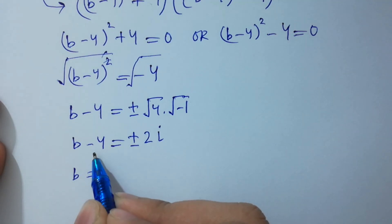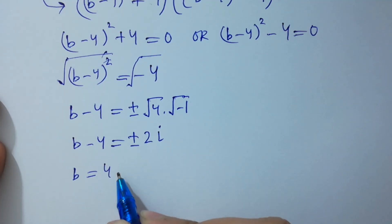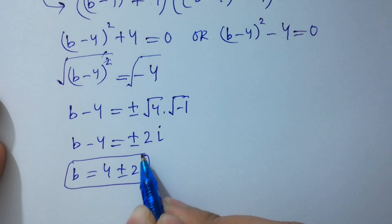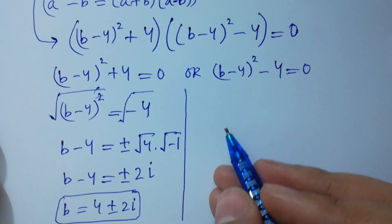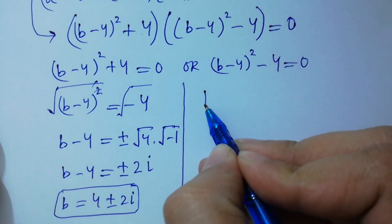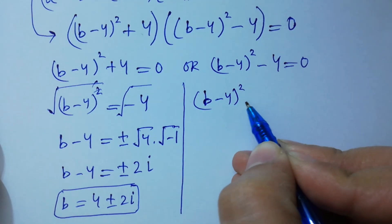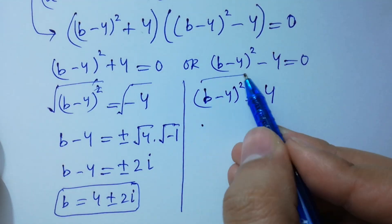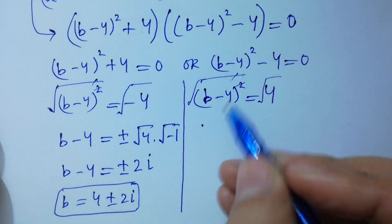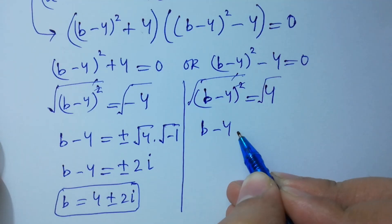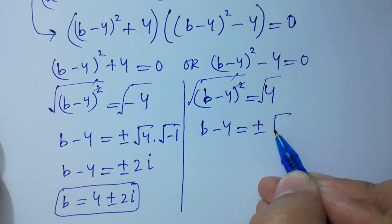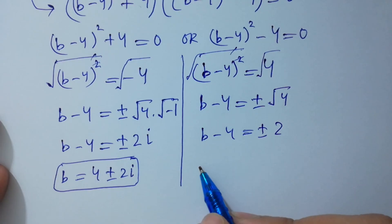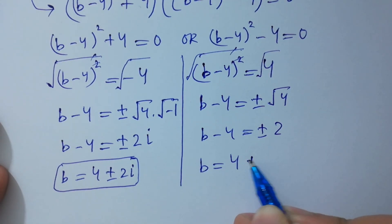So b−4 = ±2i gives two complex solutions. From the second case, (b−4)² − 4 = 0, so (b−4)² = 4. Taking square root on both sides, the square cancels and b−4 = ±√4 = ±2. Therefore b = 4 ± 2.